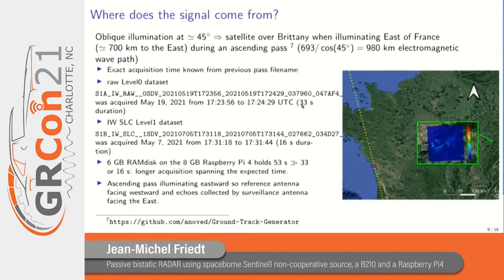We can determine where the satellite is located as it illuminates our site in Besançon, east of France near the Swiss border. Since Sentinel-1 illuminates right-side looking at around 45 degrees from an orbit of ~700 km altitude, the satellite is about 700 km to the west — flying over the Atlantic Ocean west of France as it illuminates Besançon at a 45-degree angle. A ground track generator fed with the NORAD two-line elements produces a shapefile that can be imported into QGIS to visualize the satellite's position.